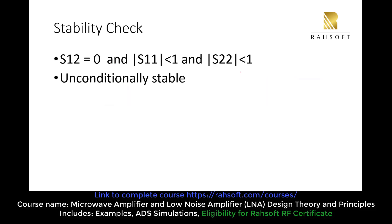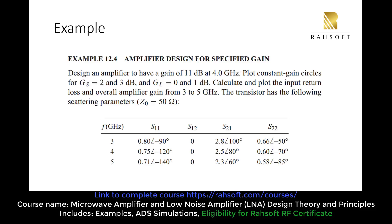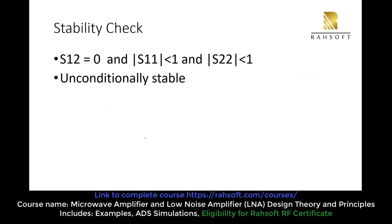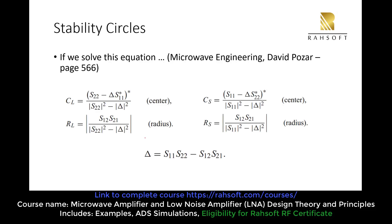In the next step, we are going to check our stability. Our S12 is 0, and if you check the S-parameters, S11 and S22 are both less than 1. So our amplifier is going to be unconditionally stable. To understand why, we go back to the stability circles at the source and load side.